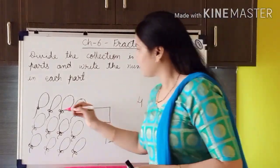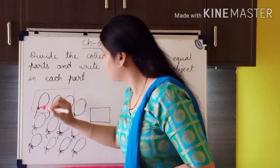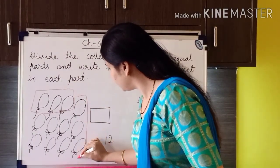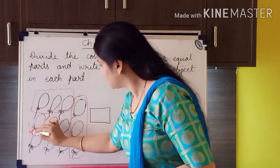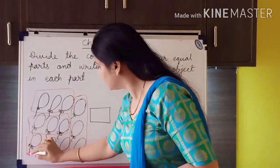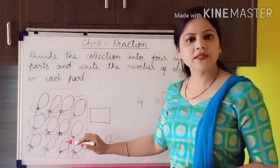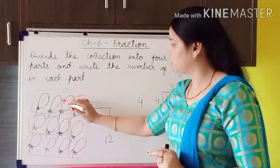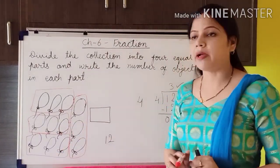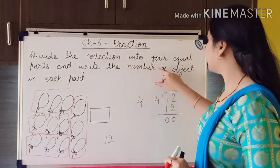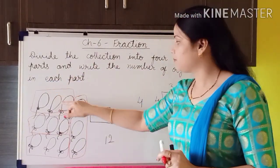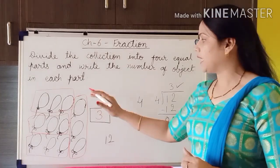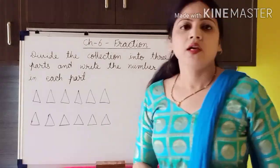The answer is 3 — in each part we have to keep three balloons. So making the groups: three here, three here, three here, and three here. You can see I have made four groups: one, two, three, four — each group contains three balloons. In the box I write: each part contains three balloons. This is how you solve the exercises.